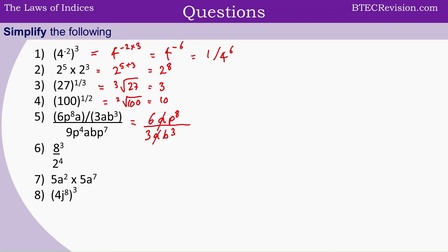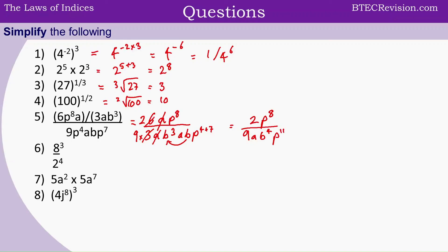We're left with 9 at the front, then alphabetically a, b — then a, b to the power of 4 plus 7. We can cancel the 6 and 3 to get a 2, and the b's can add together. So that simplifies to 2, b to the power of 8, divided by 9. We have an a, the b's add to give b to the power of 4, multiplied by p to the power of 11. Then we cancel the p's, giving us 2 divided by 9ab to the power of 4, and p to the power of 3.